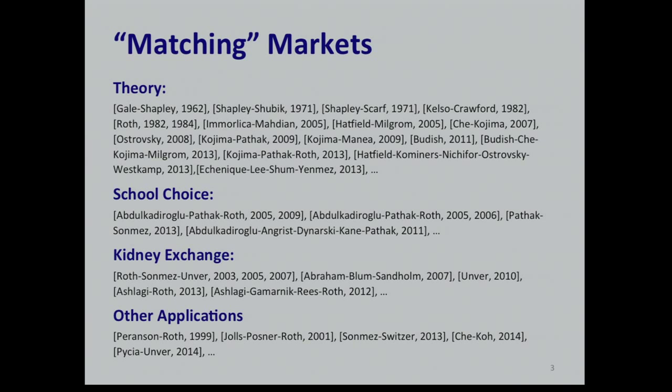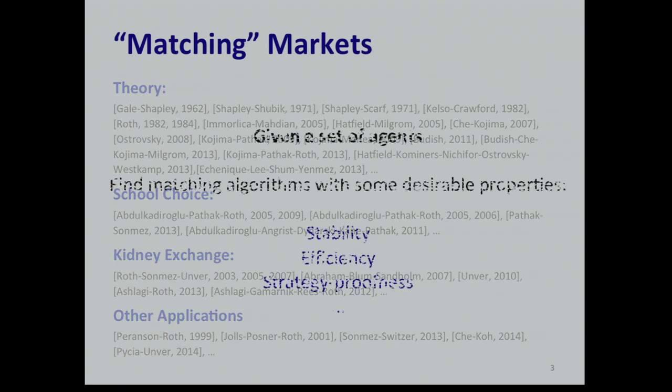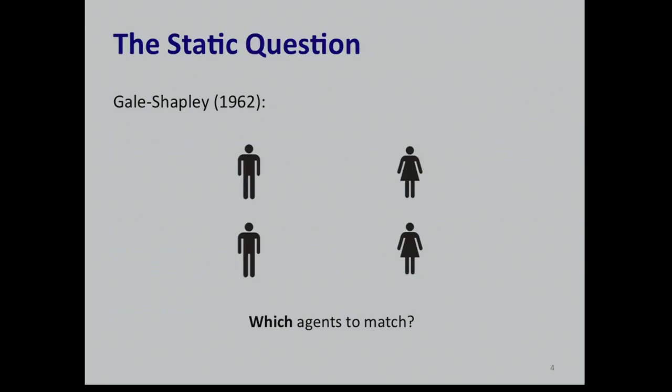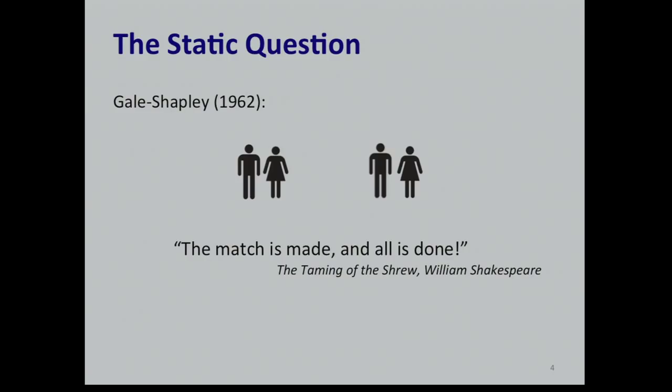What I want to emphasize is that if you look at these papers, you can see that the question asked has the following theme: given a set of agents and their reported preferences, find a matching algorithm with some desirable property — stability, efficiency, or strategy-proofness. Take the classic example, Gale-Shapley: I have n men, n women, and my goal is to find a stable match. The key point is that once the match is made, all is done.